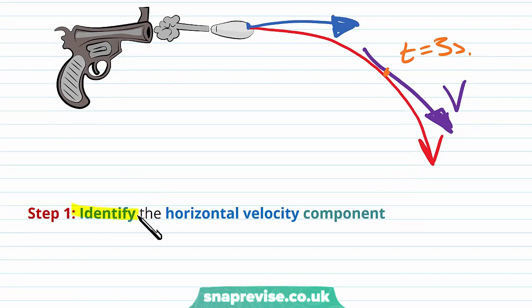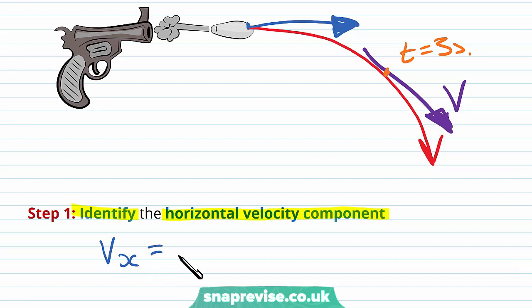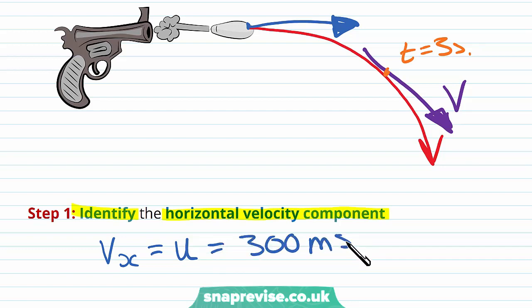Our first step is to identify the horizontal velocity component. The horizontal velocity component is going to stay constant throughout the projectile's motion, because horizontally there is no acceleration or deceleration. So immediately we can say that vx is equal to u — equal to the initial horizontal velocity — so vx is going to be 300 meters per second throughout the whole motion.